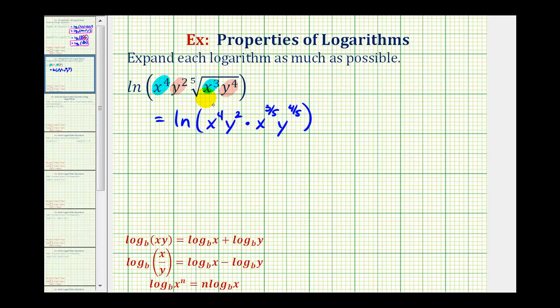Now that it's in this form, we can multiply x to the fourth and x to the three-fifths, as well as y to the second and y to the four-fifths. Remember when multiplying and the bases are the same, we add the exponents. So to multiply x to the fourth and x to the three-fifths, we need to add the exponents. Four plus three-fifths is just four and three-fifths. Let's convert this to an improper fraction. Five times four is twenty plus three, that'd be twenty-three-fifths.